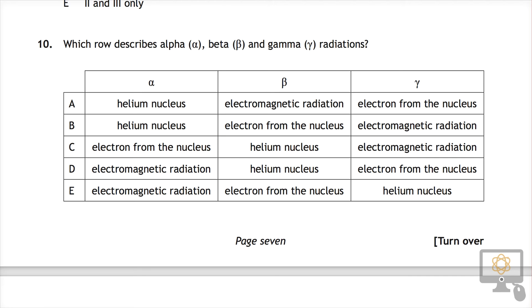Okay, so let's have a look at question 10 from the National 5 2014 physics paper. It says which row describes alpha, beta, and gamma radiations?